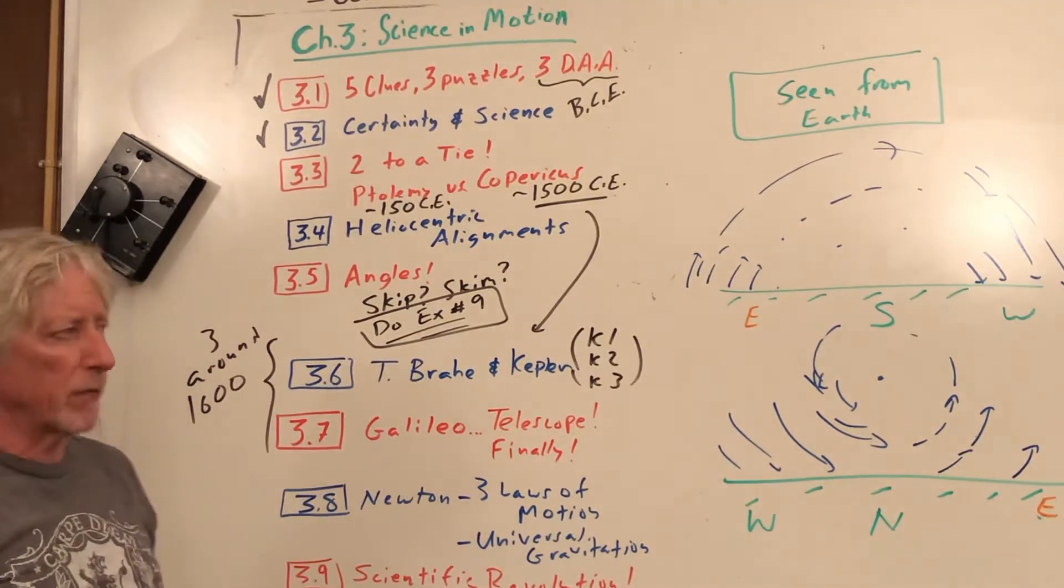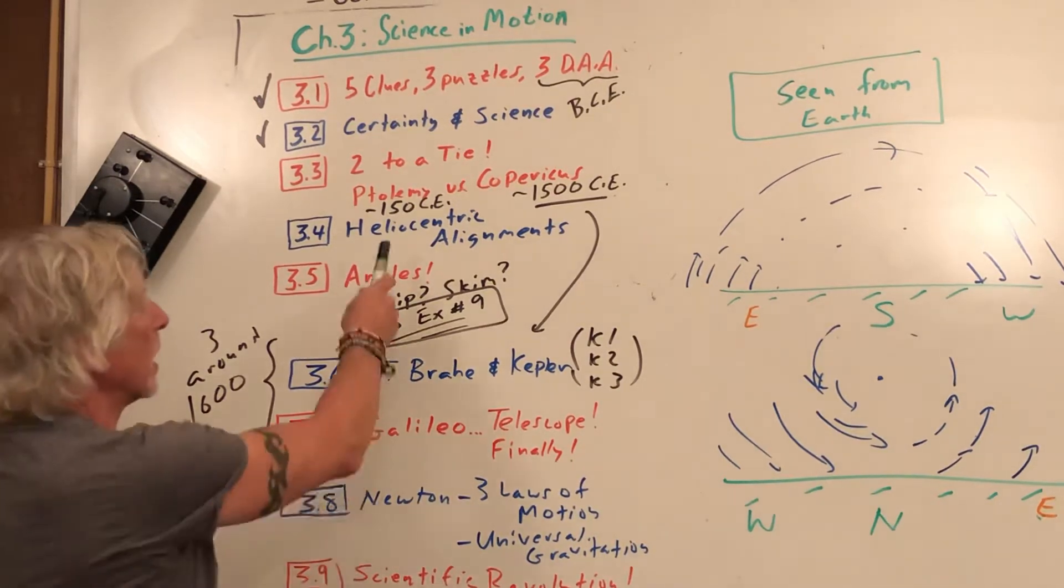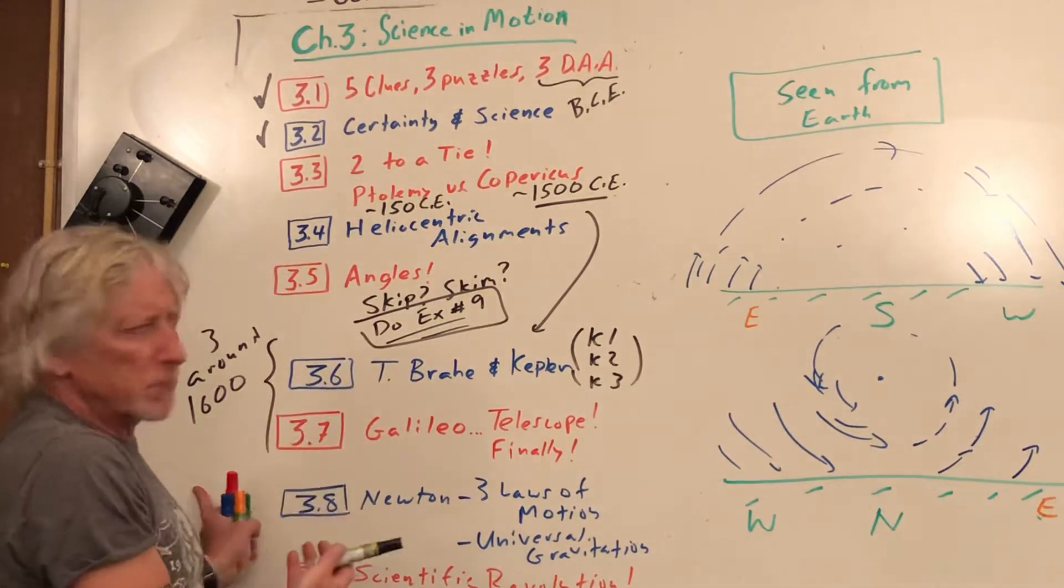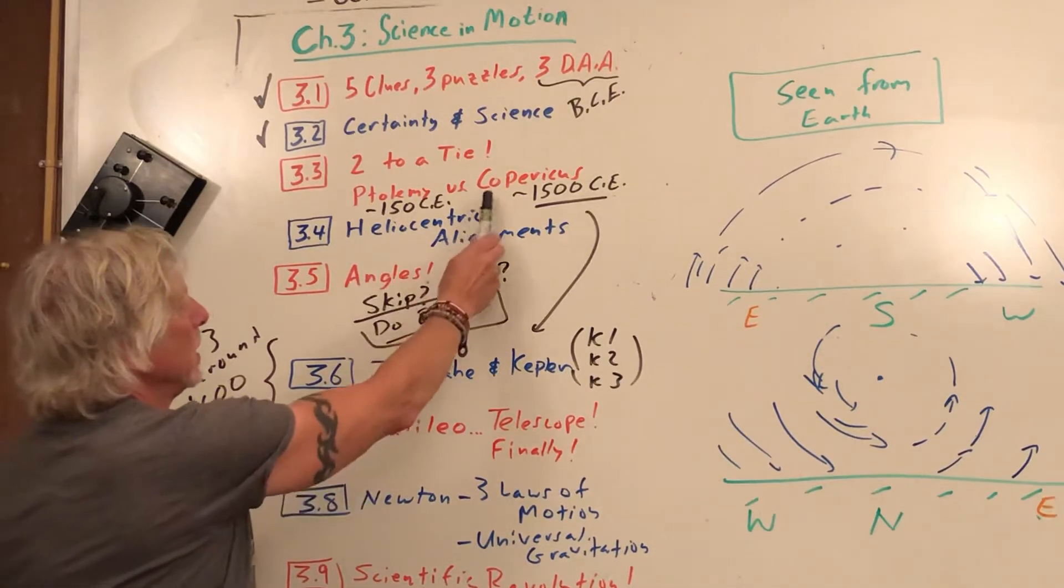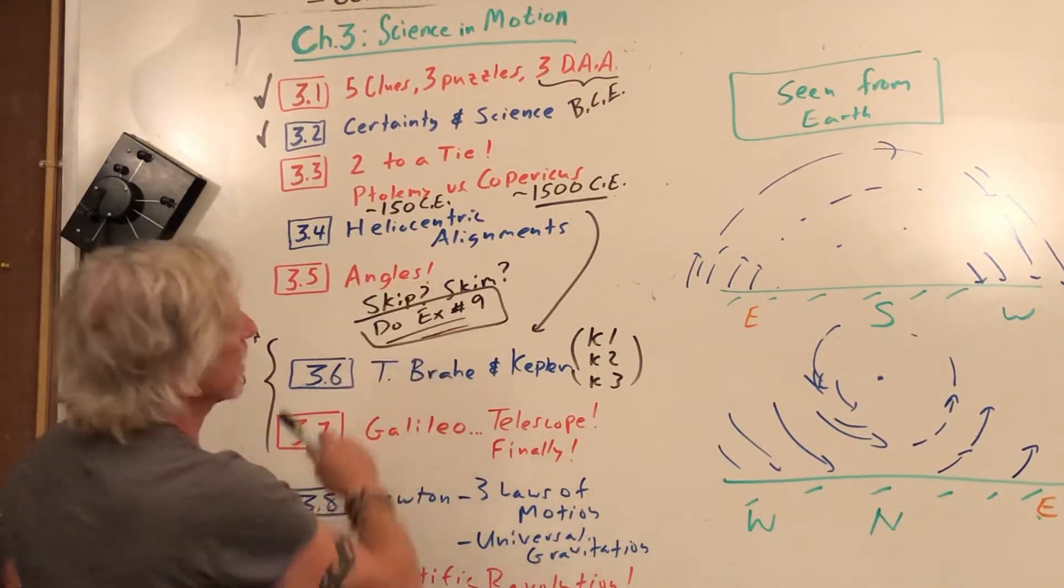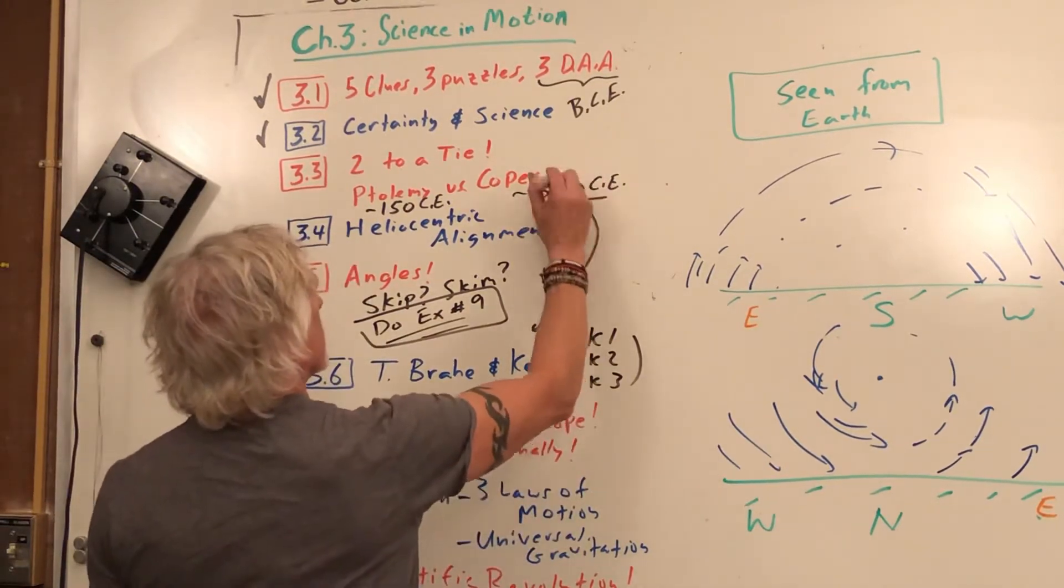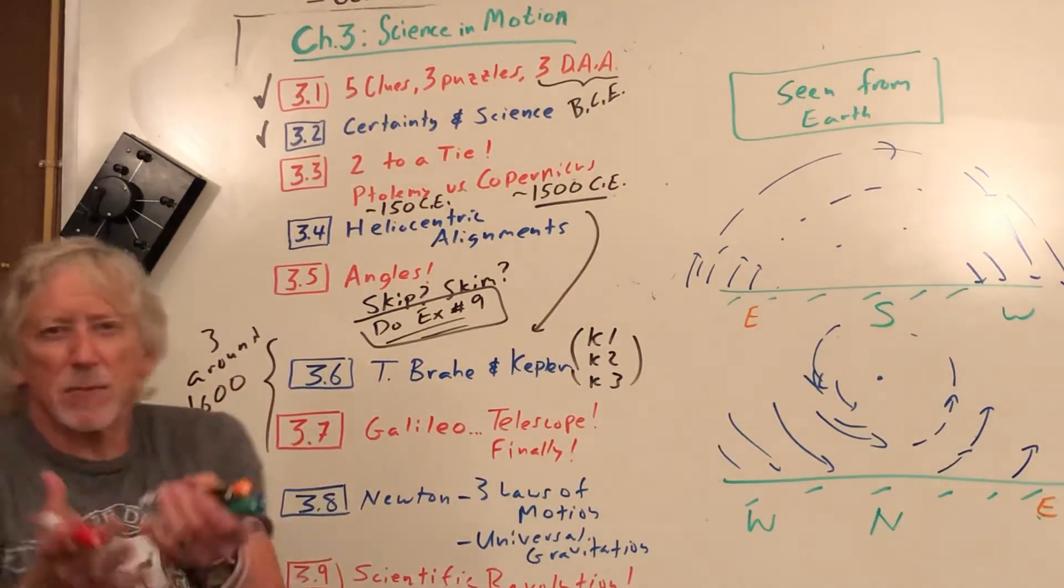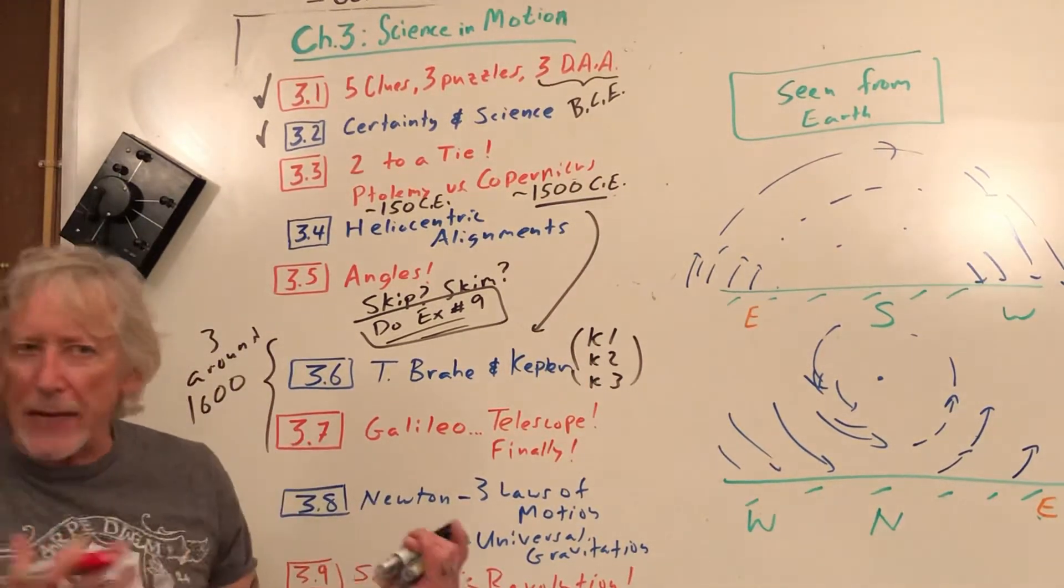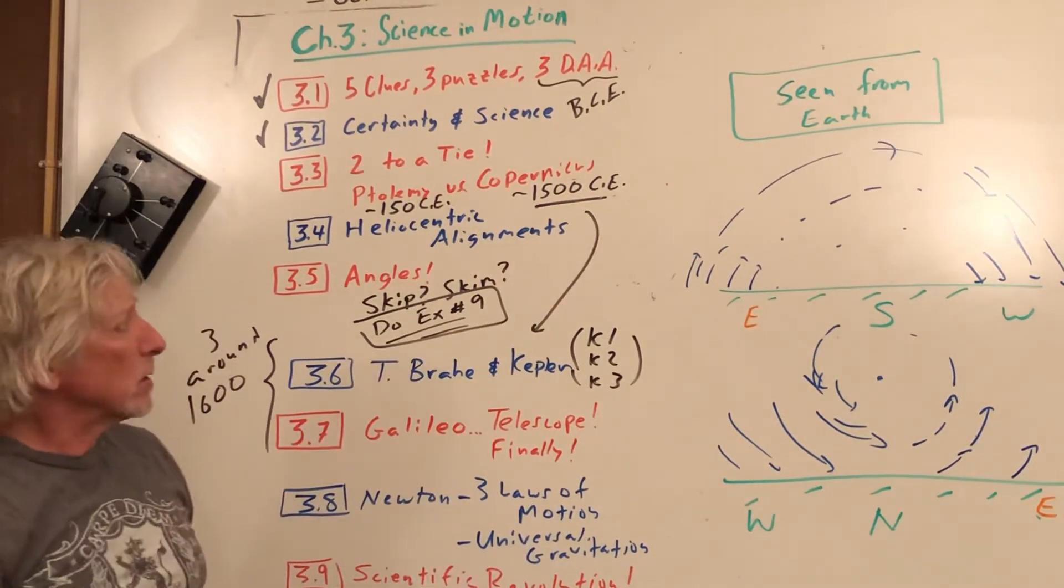Let's take a look. We're going to talk about Ptolemy - you don't pronounce the P - around 150 Common Era, and Copernicus around - just to make it easy, add a zero to the end - about 1500. You don't have to remember the exact date.